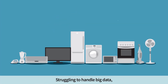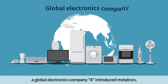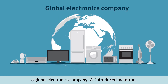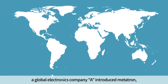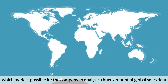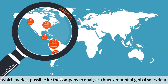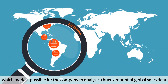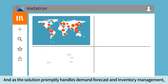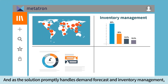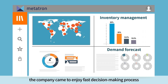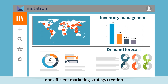Struggling to handle big data, a global electronics company A introduced Metatron, which made it possible for the company to analyze a huge amount of global sales data. And as the solution promptly handles demand forecast and inventory management, the company came to enjoy a fast decision-making process and efficient marketing strategy creation.